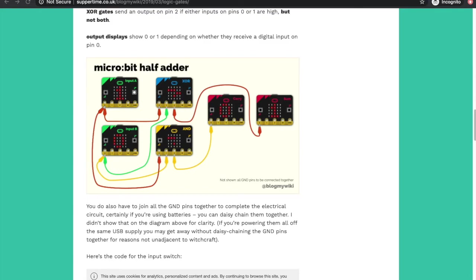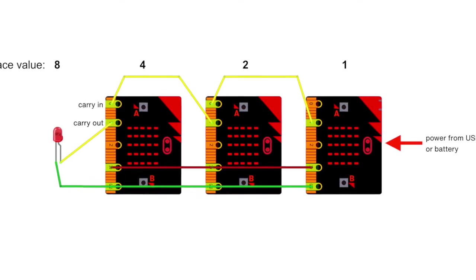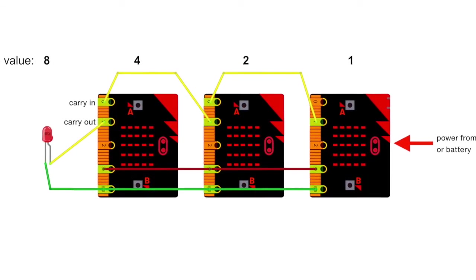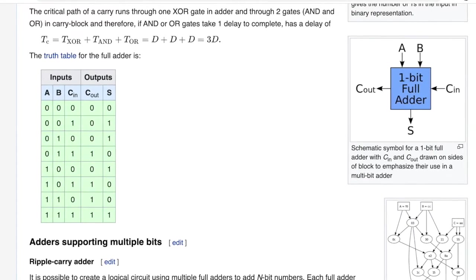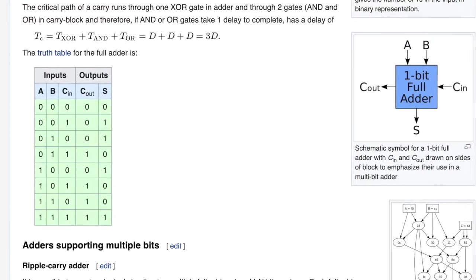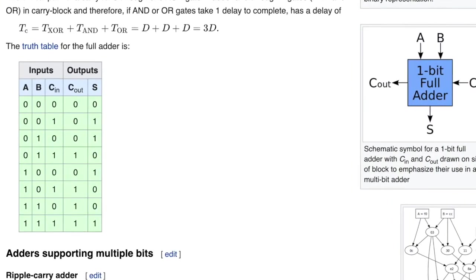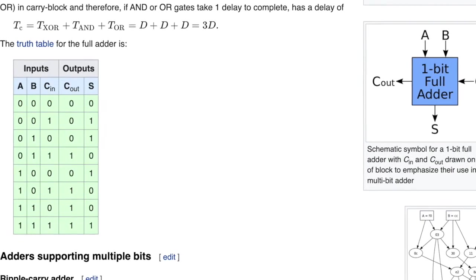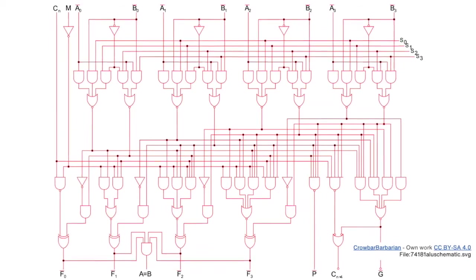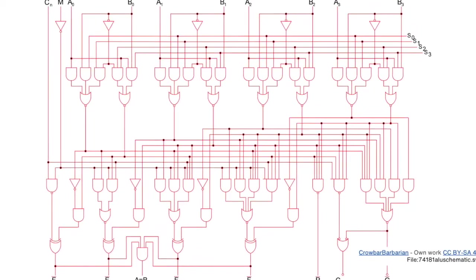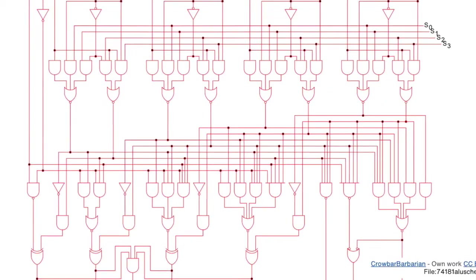I've just made another project where you can make a full adder using a single micro:bit and connect them together. The full adder has not two but three inputs: A, B, and a carry in. As well as the two numbers you're adding, the carry in takes the carry out from a neighbouring adder, just as you carry numbers when doing column addition in base 10 arithmetic. You can add together as many full adders as you like, and every adder you add makes the largest number you can add twice as big.